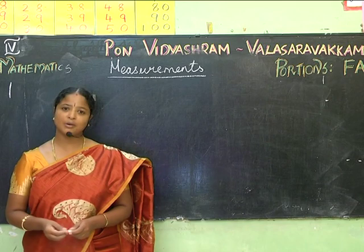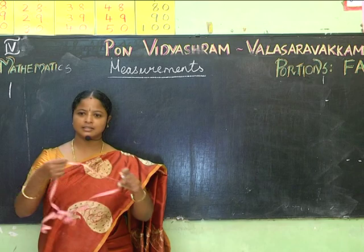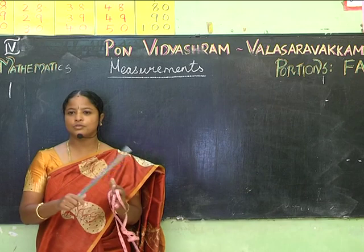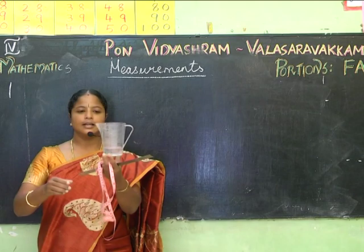Can you tell me what is this? This is the measuring tape. And this is the ruler, which you use in your day-to-day life to draw lines. And then what is this? It is a measuring jar, which helps you to measure liquids.